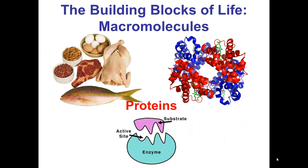Our last group of macromolecules are, in fact, the proteins. Shown here on the top left are dietary sources of proteins, including meats, nuts, and eggs. However, proteins also include the hemoglobin that carries oxygen in our blood. And many proteins are also enzymes that catalyze biological reactions that allow life to occur.